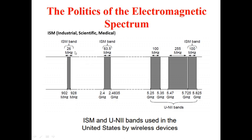The specific ISM band frequencies range from 100 to 255 MHz, with specific sub-bands at 5.25 to 5.35 GHz, and another at 83.5 MHz. These are the ISM bands used in the United States for wireless devices.